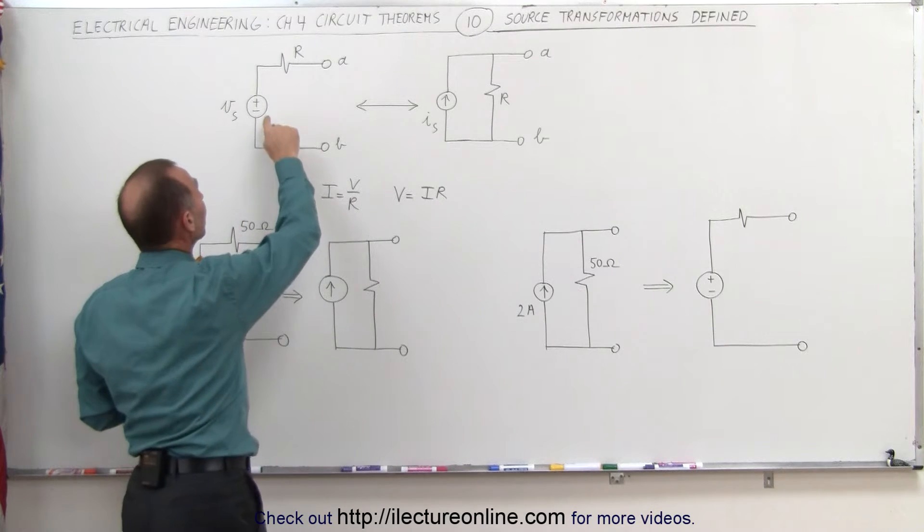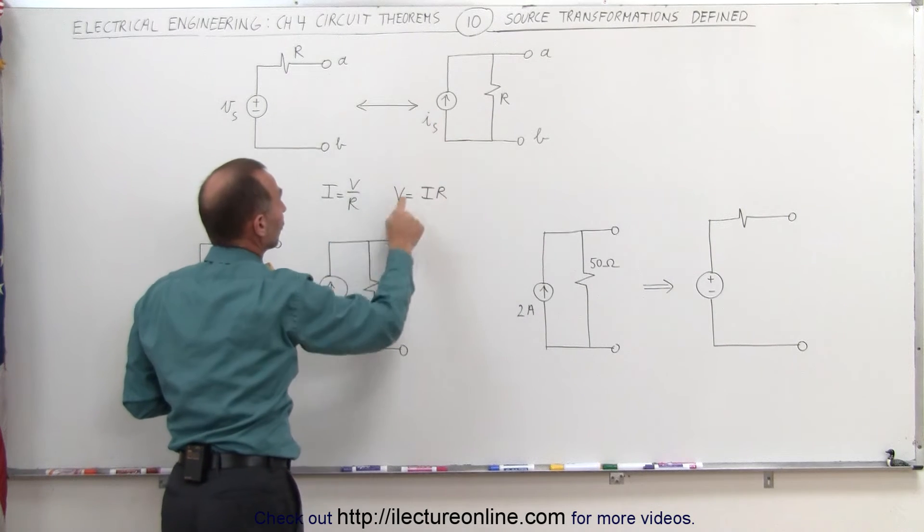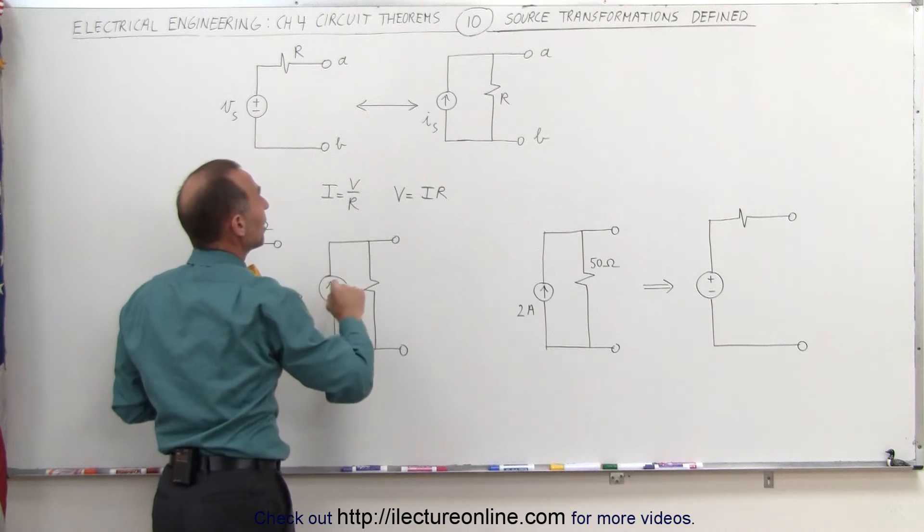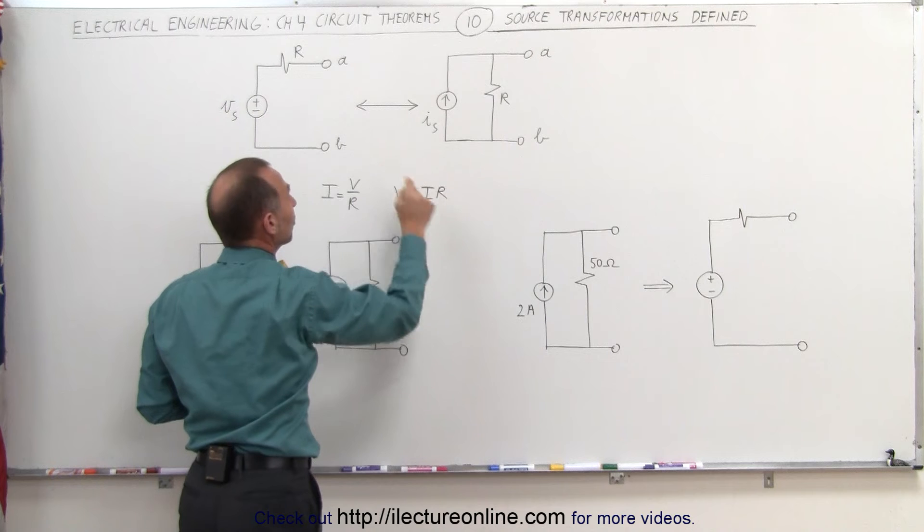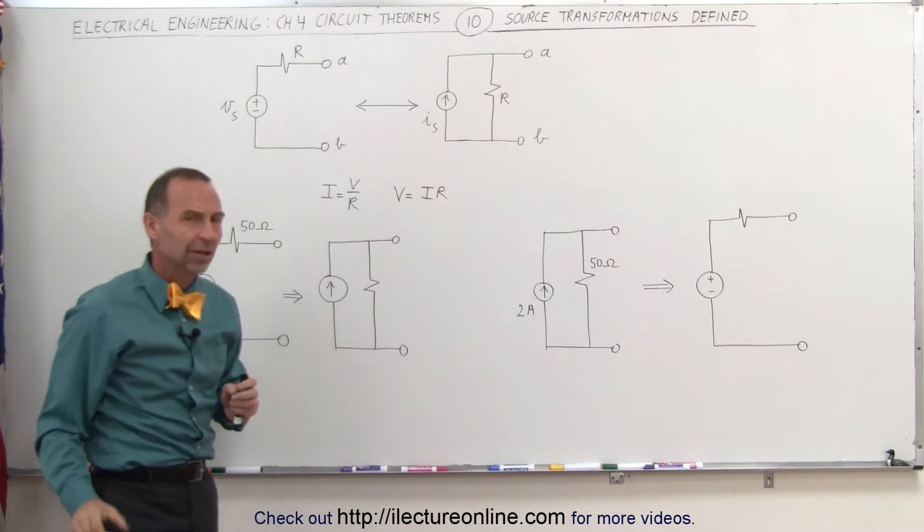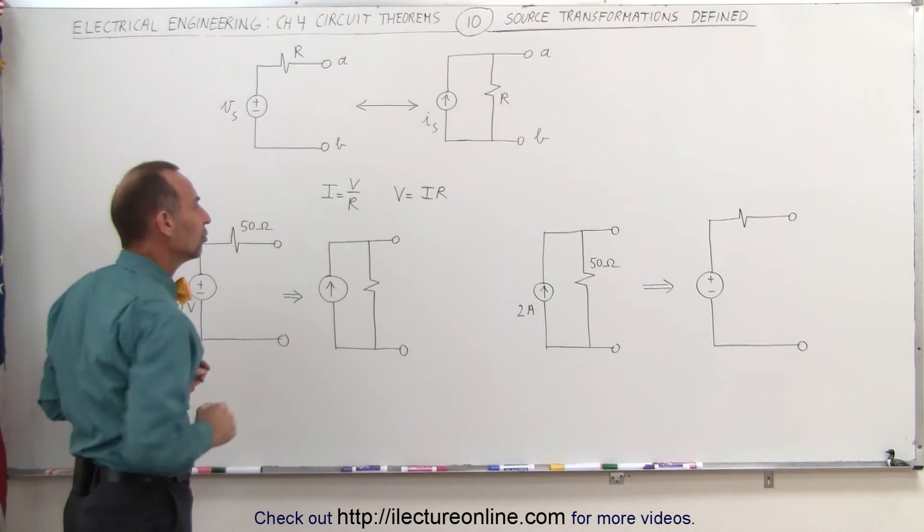When we then go from the voltage to the current to find the current we simply take the voltage and divide it by the resistance. If we go from the current to the voltage, we simply take the current, multiply the resistance and make that the voltage. Let's illustrate that in these two simple examples.